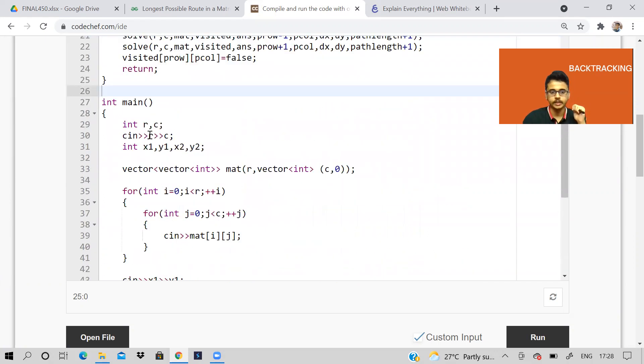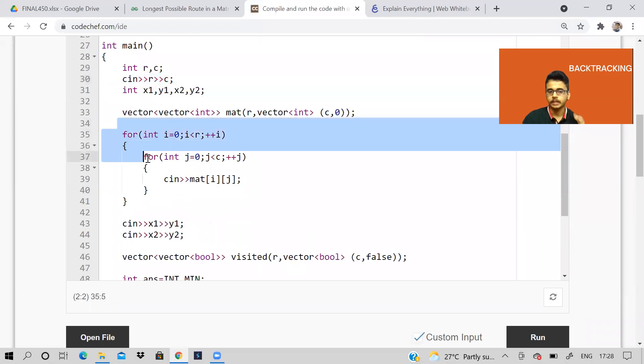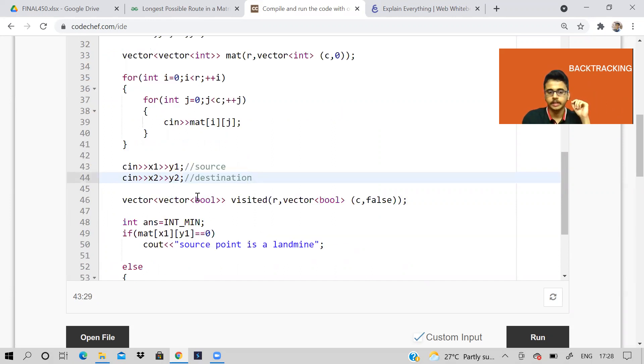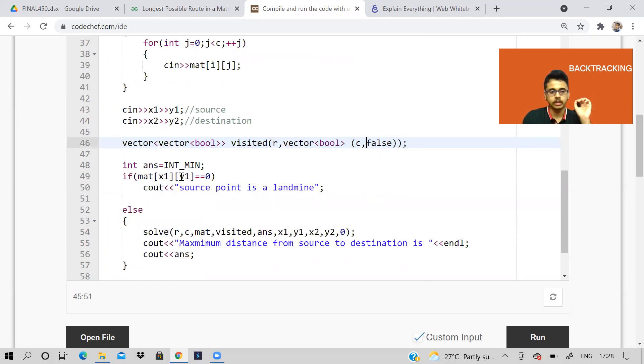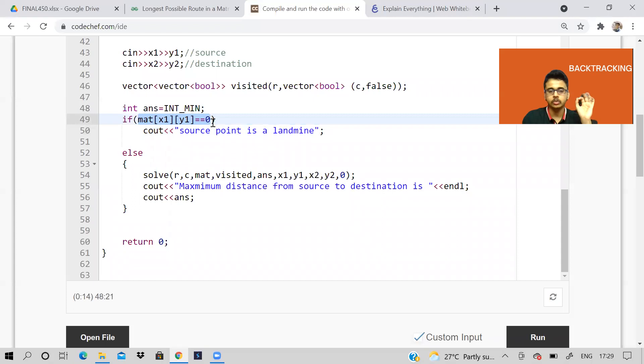So see here, I'm taking input here, number of rows, number of columns. Then I'm taking the matrix input. Then I'm taking the source input. So this is source. And this is destination. It is that cell, the coordinate x, y coordinate. Then I'm taking a visited array and all the cells are initially unvisited. So it is marked false. Now I'm checking if my starting point, the source itself is a landmine. Actually, I should write hurdle here. There is another problem, which I'll be doing tomorrow. That is landmine. So source point is a hurdle. Then we don't have any path. We can't traverse only.